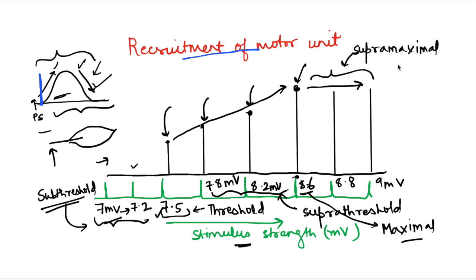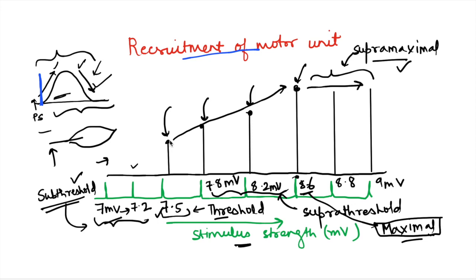So depending on the stimulus strength: sub-threshold stimulus produces no contraction; threshold stimulus is where contraction just starts; supra-threshold stimuli produce increasing contraction; maximal stimulus produces maximum contraction; and supra-maximal stimulus produces no further increase. This is recruitment of motor units — initially only one or two motor units are excited giving a small contraction, and as more neurons of other motor units are stimulated, more muscle fibers contract and contraction strength increases.